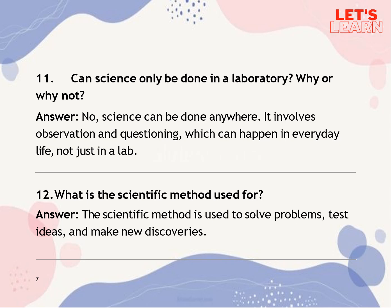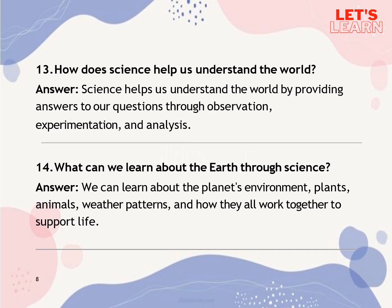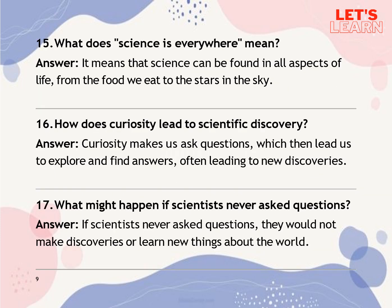Question 12: What is the scientific method used for? The scientific method is used to solve problems, test ideas and make new discoveries. Question 13: How does science help us understand the world? Science helps us understand the world by providing answers to our questions through observation, experimentation and analysis. Question 14: What can we learn about the earth through science? We can learn about the planet's environment, plants, animals, weather patterns and how they all work together to support life. Question 15: What does 'science is everywhere' mean? It means that science can be found in all aspects of life, from the food we eat to the stars in the sky.